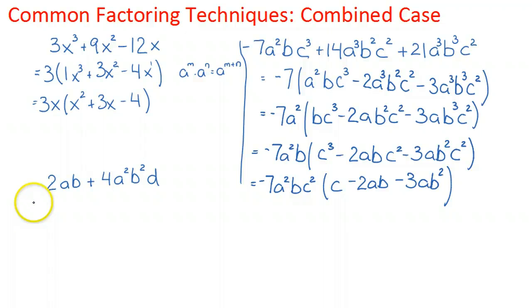Let's look at this example because it is a little bit different. In this example, I'm going to do everything at once. I notice that I can factor out a 2, an a, and a b. Now notice there's a d in the second term, but since there's not a d in the first term, I can't factor that out.